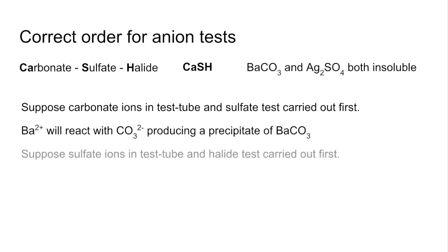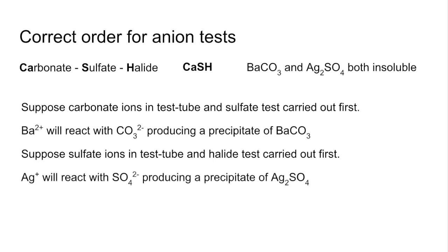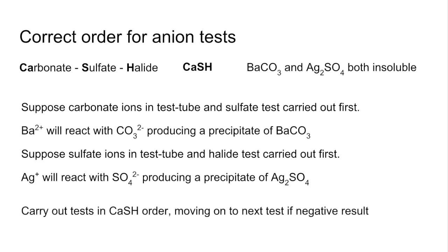Likewise, if you had sulphate ions in your test tube and carried out a halide test, the silver ions used can react with sulphate ions to give a precipitate of silver sulphate — leading you to think you have a halide. To avoid that, carry out the tests in the CASH order: carbonate first, then sulphate if no response, then halide if no response.